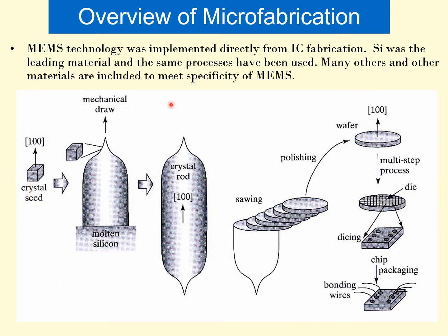From the single crystal seed, molten silicon is prepared; from the molten silicon, the silicon crystal rod — the boule — is generated; from the boule, the wafer is created; and on the wafer, IC fabrication or MEMS fabrication is performed. This is how single crystal silicon is generated using the Czochralski method. Hope you understand the concept. Thank you.